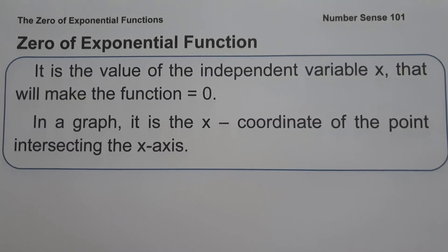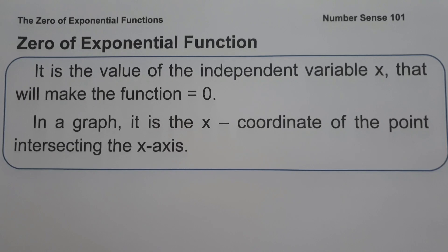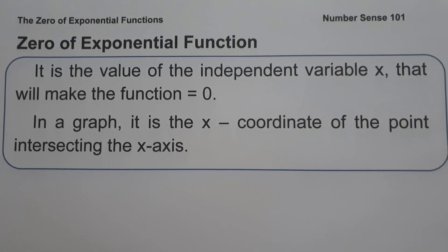For today's video, we are going to talk about how to find the zero of exponential functions. When we say zero of an exponential function, it is the value of the independent variable x that will make the function equal to zero. In a graph, it is the x-coordinate of the point intersecting the x-axis. These are the basic concepts you need to remember in order to find the zero of an exponential function.